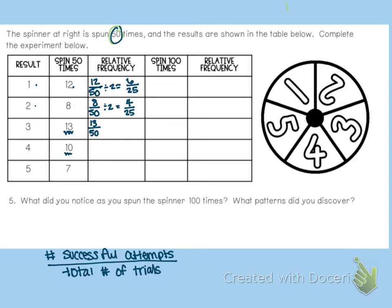And then successful for landing on 4, it landed on 4 ten times out of 50. So I can simplify that and if I divide by 10, I get 1/5. Press pause and fill out the last relative frequency for me, please.